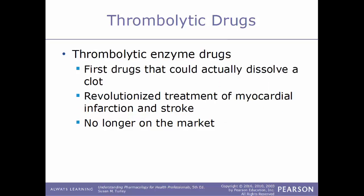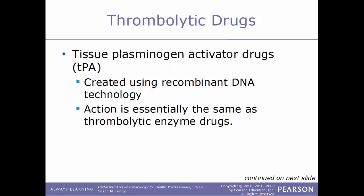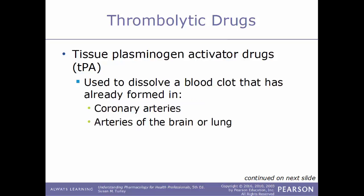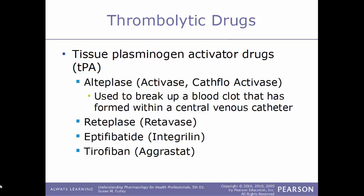Thrombolytic enzyme drugs were the first drugs that could actually dissolve a clot, and they revolutionized the treatment of myocardial infarctions and strokes, but these are no longer on the market. Another type of thrombolytic drugs are TPAs — tissue plasminogen activators — created using recombinant DNA technology. Their action is essentially the same as thrombolytic enzyme drugs. These drugs are given while a patient is experiencing a myocardial infarction, stroke, or pulmonary embolism, to dissolve a blood clot that has already formed within the coronary arteries or arteries of the brain and lung.